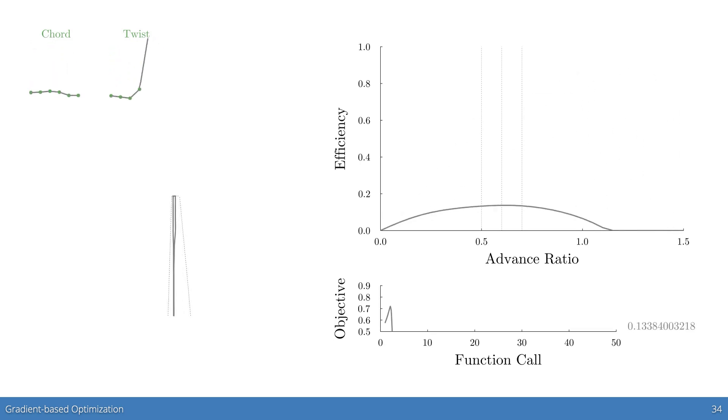We first ran an isolated rotor optimization for reference, which excluded the duct and center-body. We see here the typical result, with the chord length decreasing toward the hub and tip, and the twist monotonically decreasing from hub to tip.